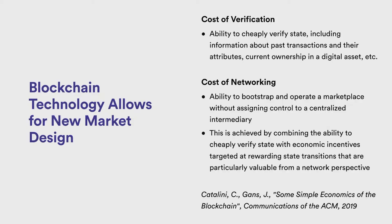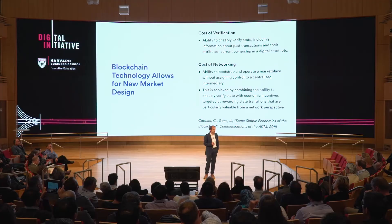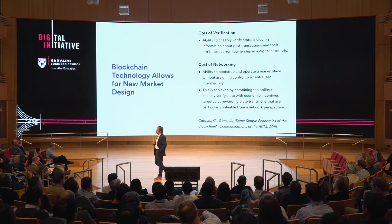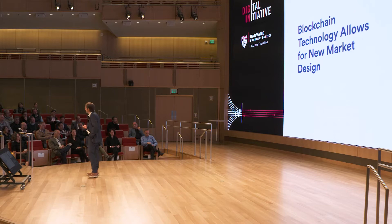Blockchain technology has two major dimensions to it — two major changes that will impact a number of organizations over the span of the next few years. The first is the most well-understood: a reduction in the cost of verification. You can use blockchain technology to verify that digital attributes are what people think they are, reconcile digital information more accurately, and achieve better auditability over time. But there's one more dimension: the ability to build and bootstrap a digital platform without assigning control to a single intermediary. That's a change in governance of a digital ecosystem, and it's a much more profound change that will take longer to unfold.